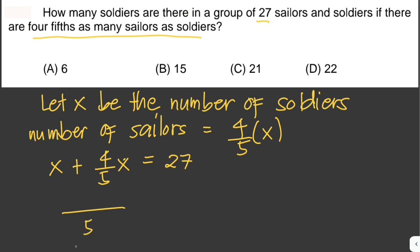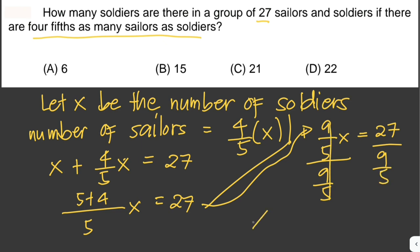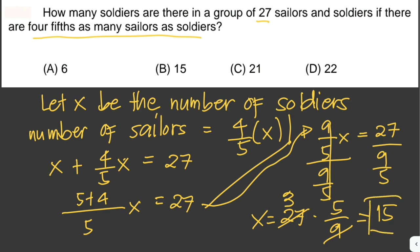So that is 1 plus 4/5 times x equals 27, which gives us 9/5 x equals 27. Dividing both sides by 9/5: x equals 27 times 5/9. Since 27 is divisible by 9, this gives 3 times 5, so x equals 15. Therefore the number of soldiers in the group of 27 is 15, and the answer is letter B.